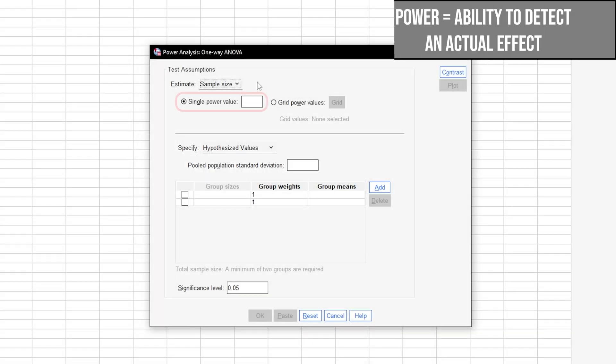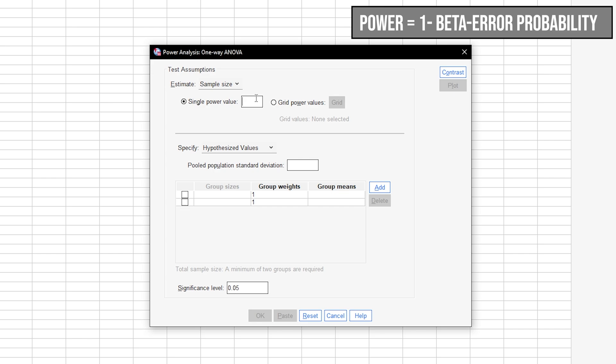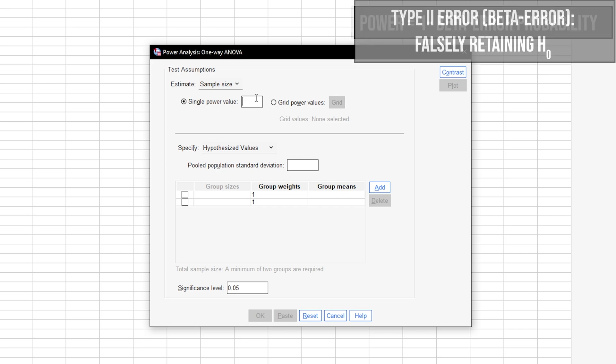Second, you can either enter a single power value or grid power values. If you have specific guidelines regarding power, you will choose single power value. For context, power equals 1 minus the beta error probability. Beta error is the type 2 error. In short, this means falsely retaining the null hypothesis.